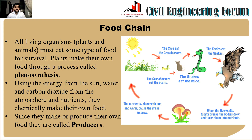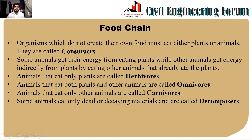As humans, we are not able to generate our own energy — we acquire it from plants or animals. Organisms which do not create their own food must eat either plants or animals; they are called consumers. Some animals get their energy from eating plants, while others get energy indirectly from plants by eating animals that already ate plants. Energy cannot be created or destroyed; it can only be transferred from one form to another.